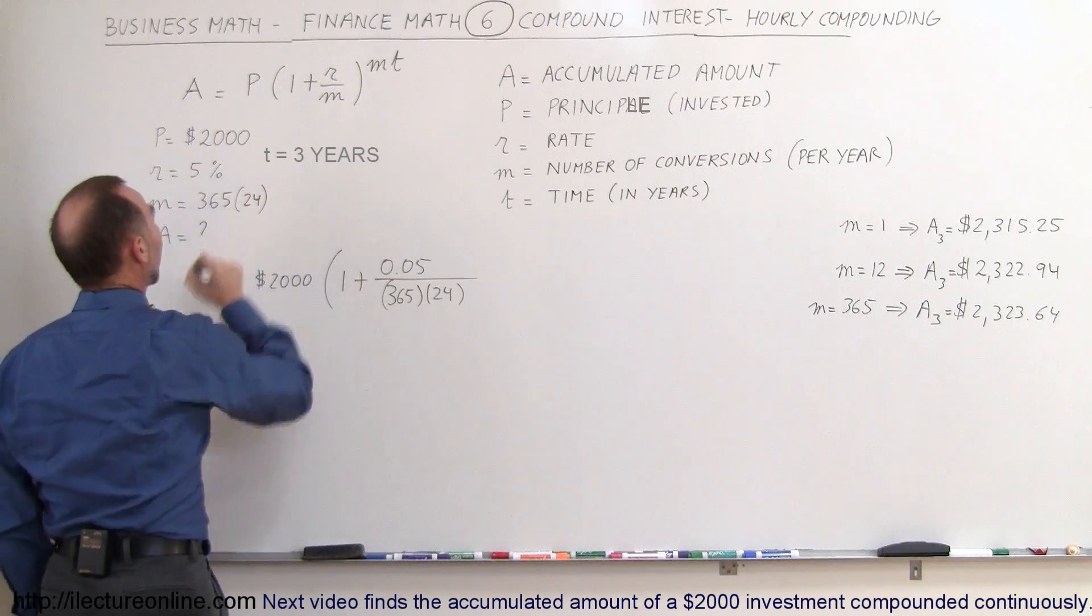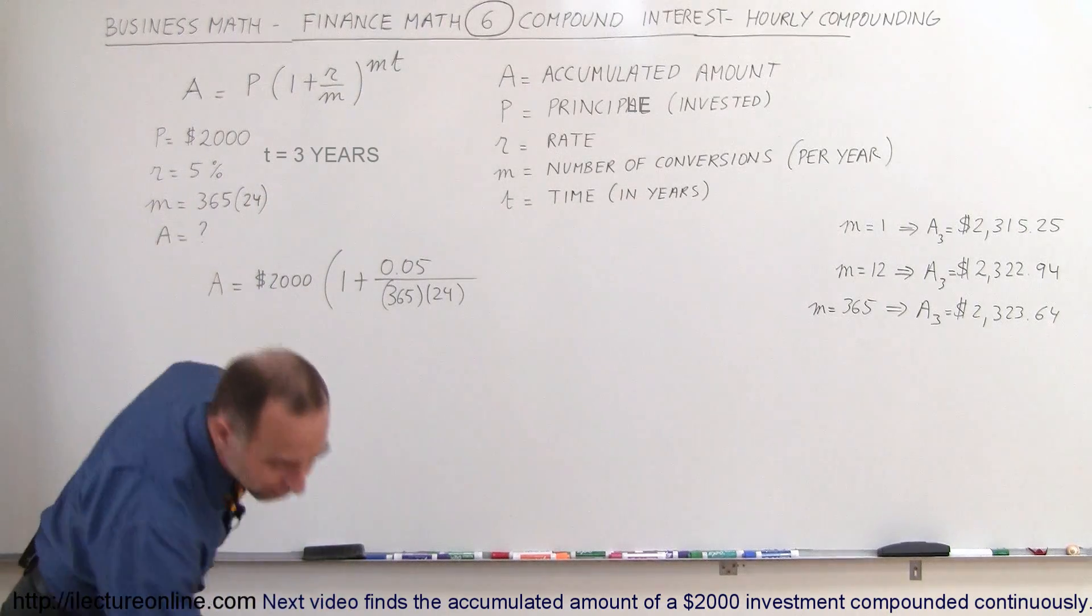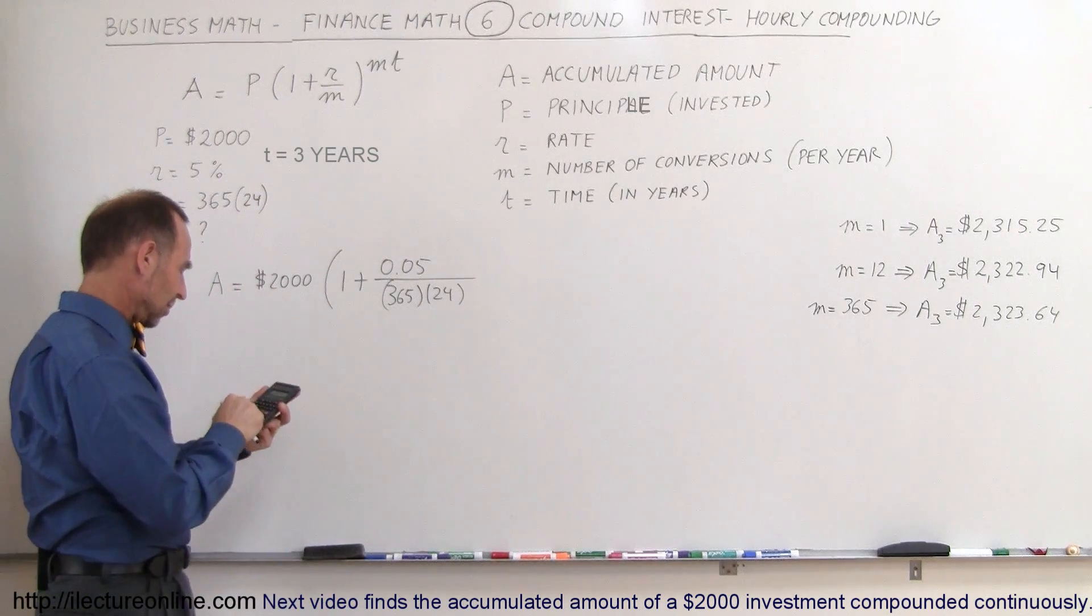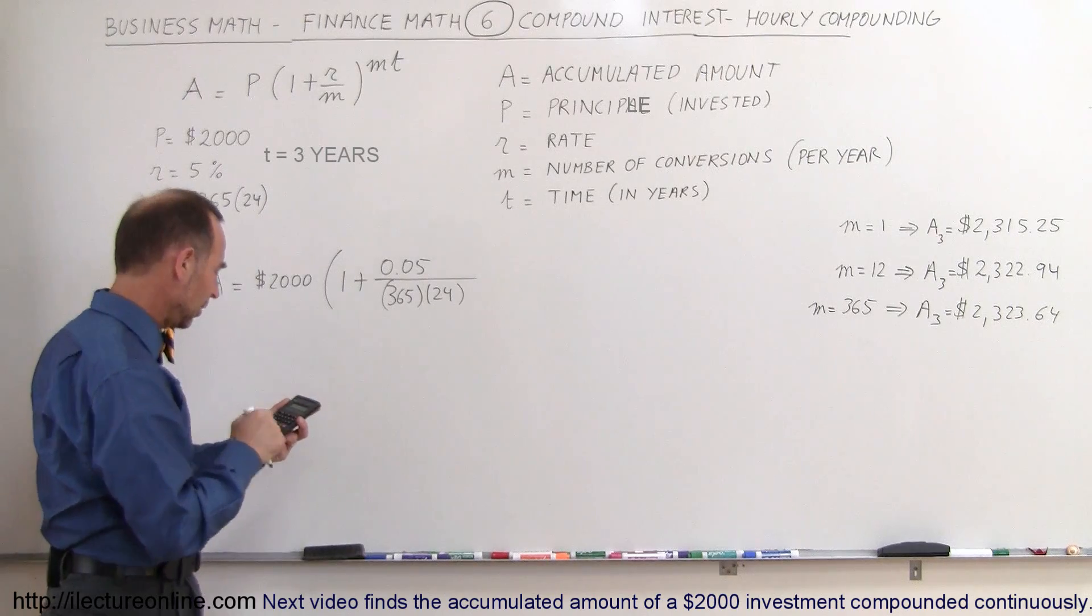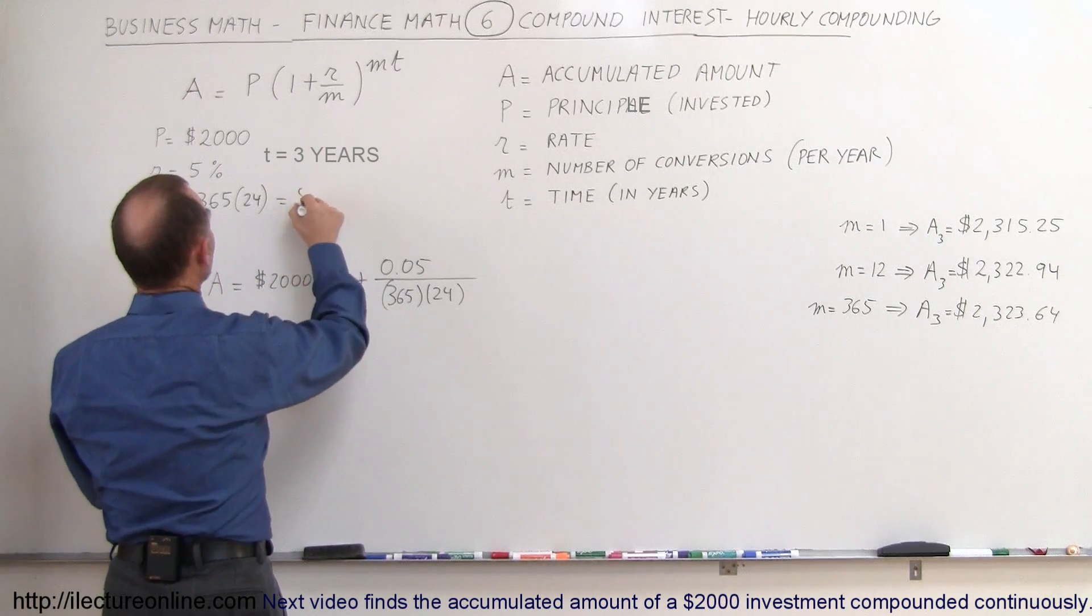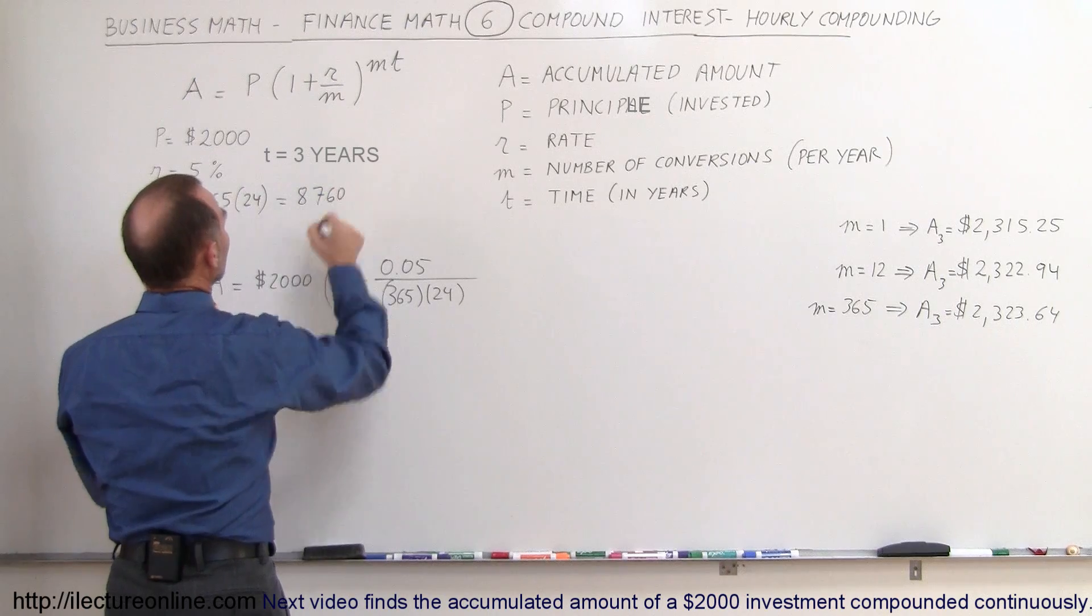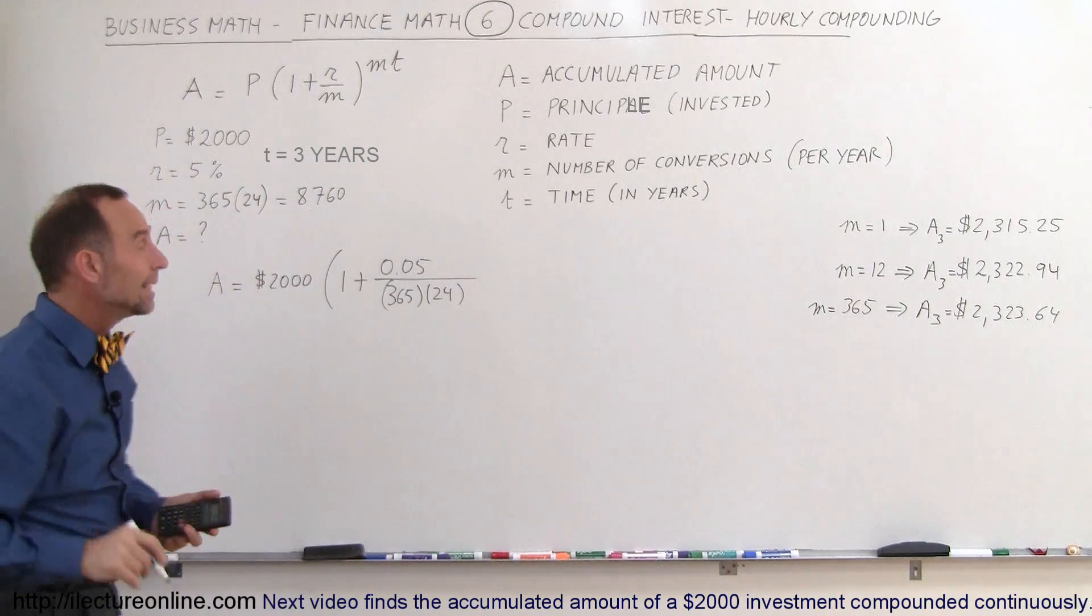If you want to know what that is we can quickly calculate it. 365 times 24 equals 8,760. That's the number of hours in a year.